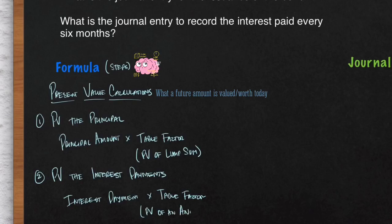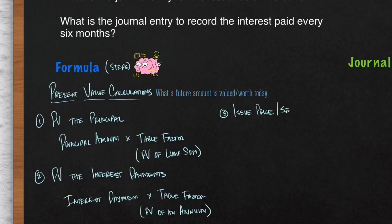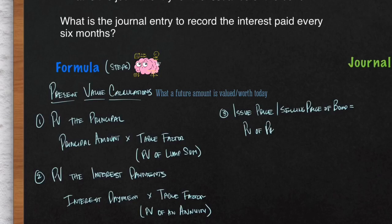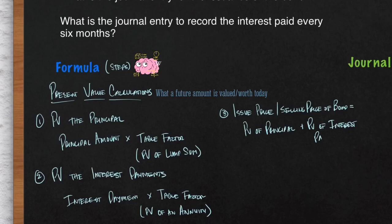Be very careful to use the correct table when calculating these present values. In the third step, you simply combine the present value of the principal and the present value of the interest payments to calculate the issue price — also called the selling price — of the bond. That tells you how much money you're going to borrow: PV of principal plus PV of interest payments equals the issue price.